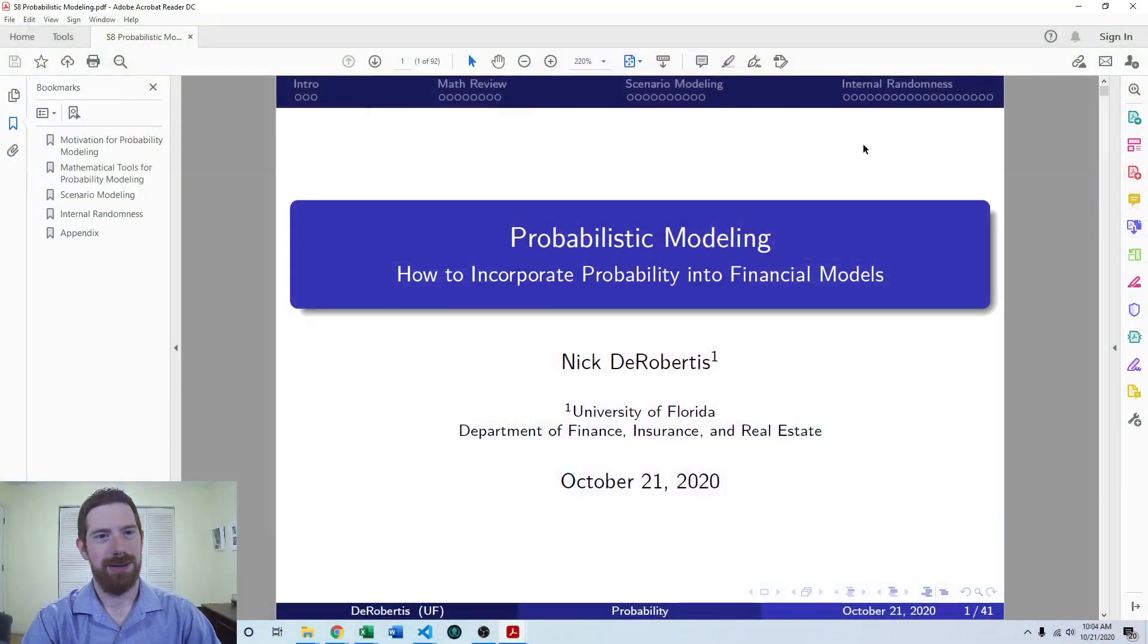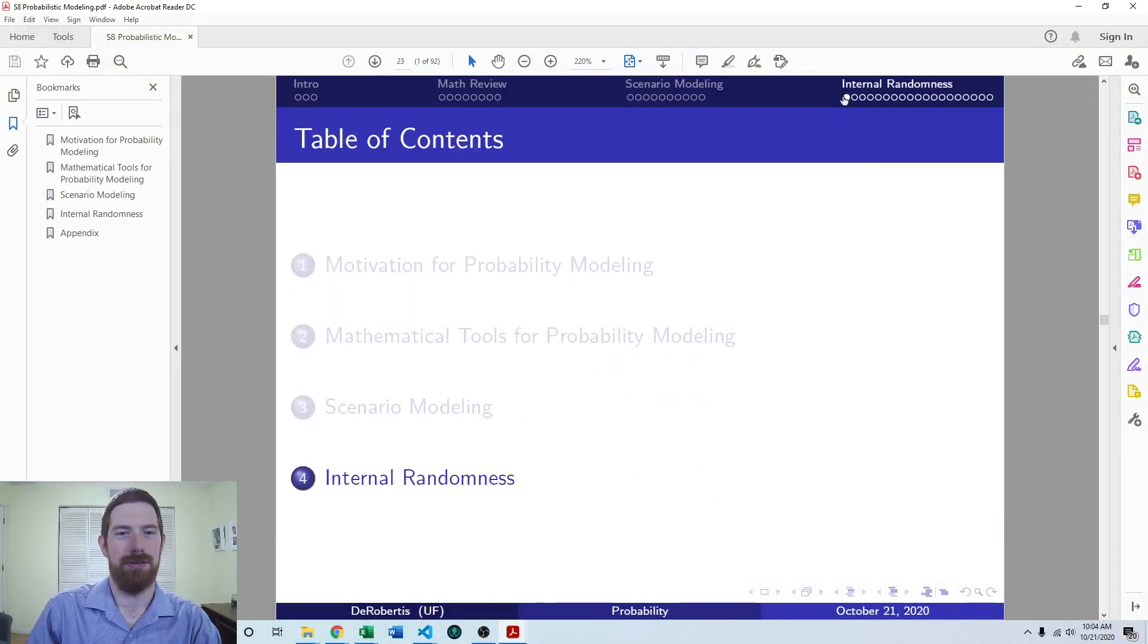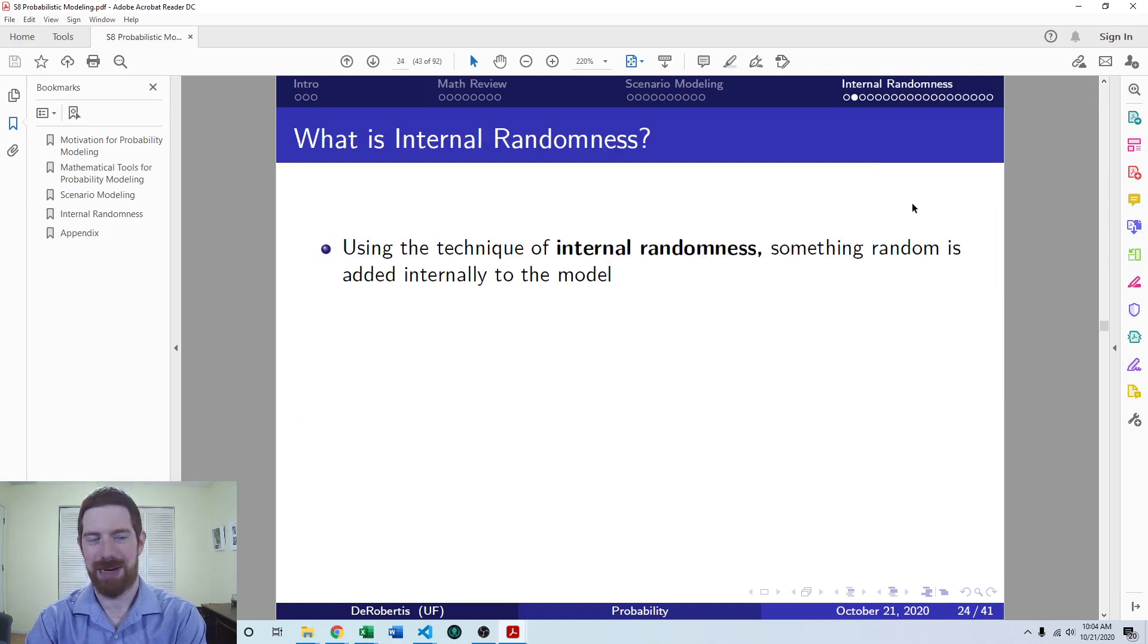This is part of our lecture series on probabilistic modeling. We already talked about scenario modeling and some math tools to work with probability in general in our models. Now let's move to internal randomness. Internal randomness is just like the name sounds. There is something internal to the model which is random.